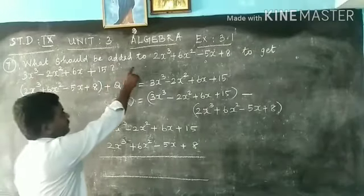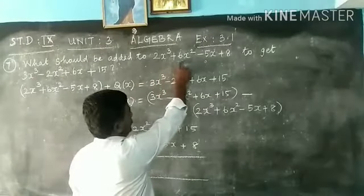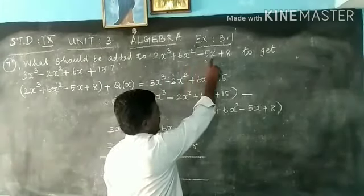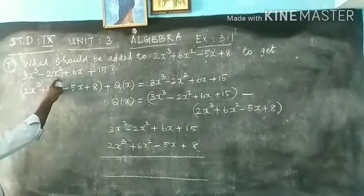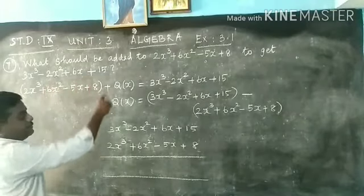What should be added to 2x² plus 6x² minus 5x² to get 3x² plus 6x² plus 6x³?